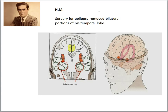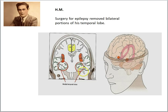Surgeons at the time suggested a radical operation to remove portions of his brain so as to treat the epilepsy — to remove those parts of the brain that were causing the seizures. It was difficult to locate the exact source of the seizure in HM's case, but the surgeons went ahead anyway and removed large portions of his brain.